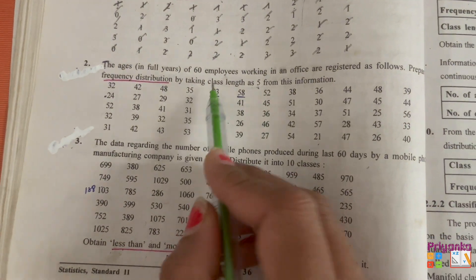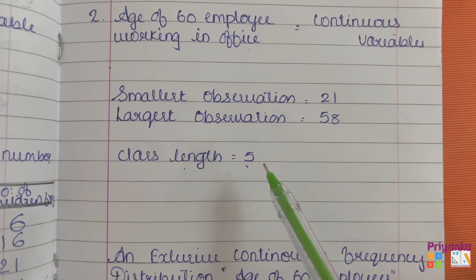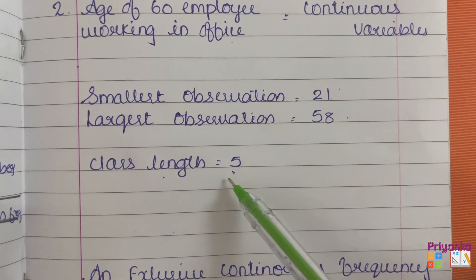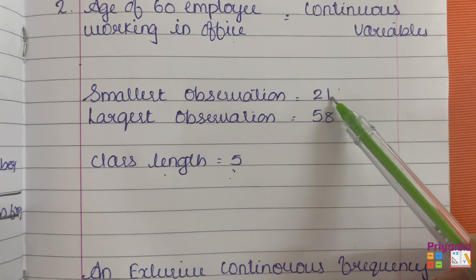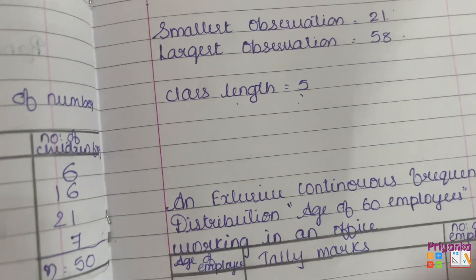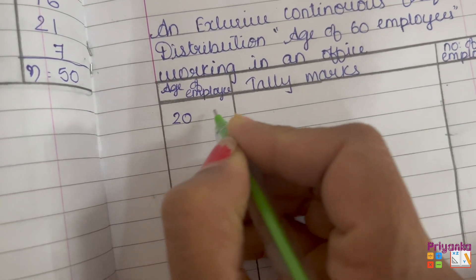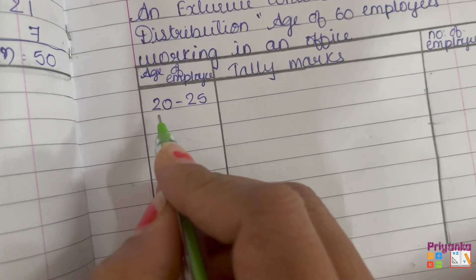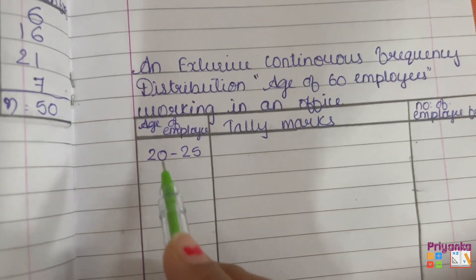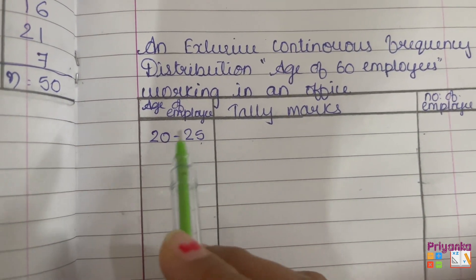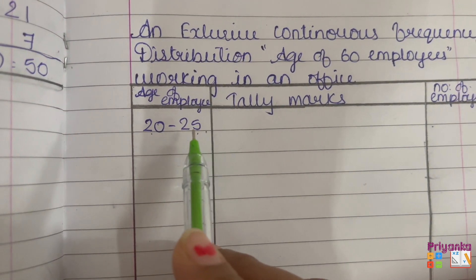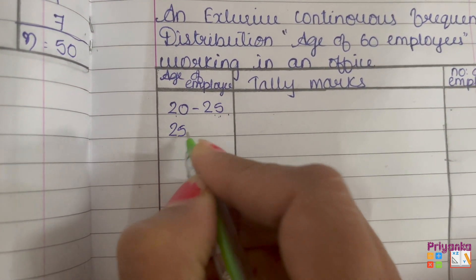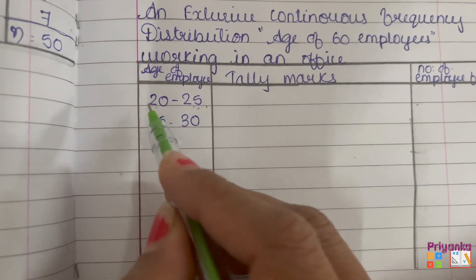As per the question, the class length should be 5. We will prepare a set of classes that includes both 21 and 58. To include 21 and maintain a class length of 5, we start with the class 20 to 25. Then we continue with 25 to 30, preparing an exclusive continuous frequency distribution.